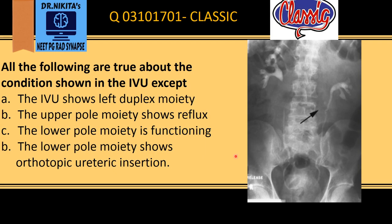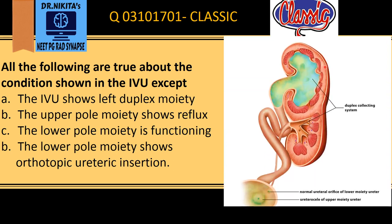To answer this question we need to analyze this IVP image, but before that let us understand what is a duplex moiety or a duplicated collecting system. A duplex moiety has a different upper pole moiety and a different lower pole moiety, which drain into different ureters. The upper pole moiety ureter inserts at a site which is inferior and medial to the lower pole moiety. The lower pole moiety inserts at the orthotopic or normal position, while the upper pole inserts inferiorly — this is called the Weigert-Meyer rule.